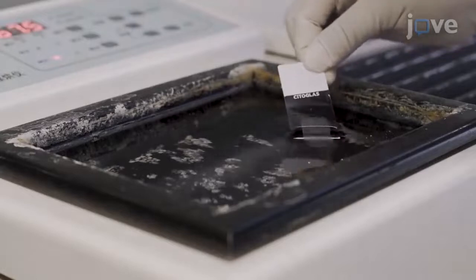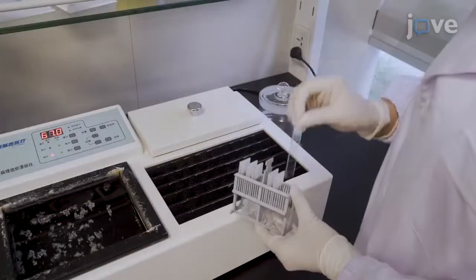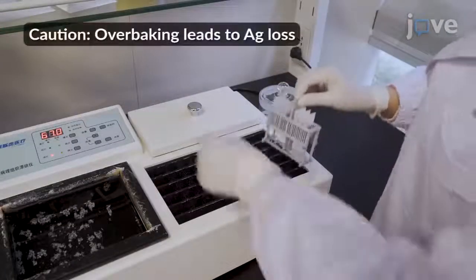Transfer the flattened sections onto glass slides and bake them in a 60 degrees Celsius oven for 3 to 5 hours.